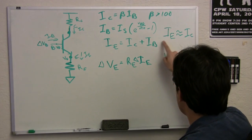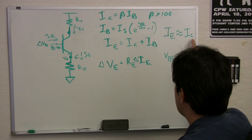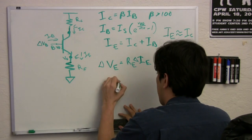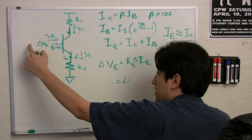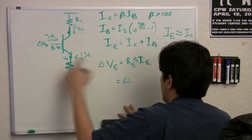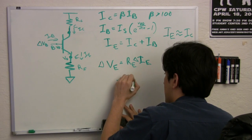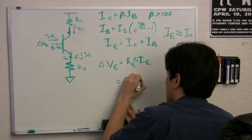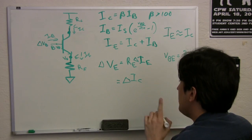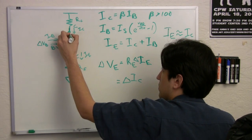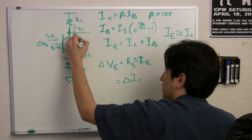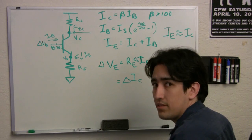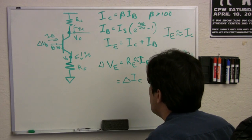Well, I just convinced you that IE is about the same as IC. So by changing this VB, I change this VE, which changed the IE, and now I get a change in IC. Well, what did that do to this voltage here that I'm going to call VC, the voltage at the collector? Well, a change in IC, which is the current coming down through this resistor, is going to cause a negative change in VC times whatever RC is.